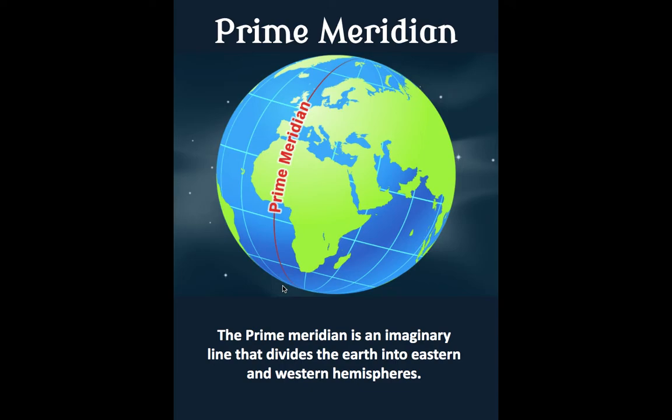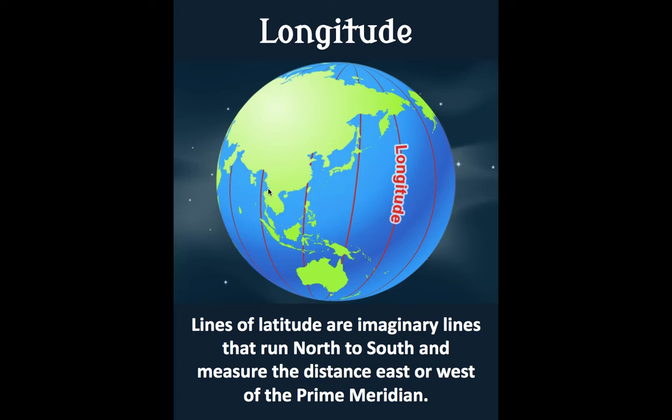This line chops the earth into eastern and western halves. We call this line the prime meridian. The prime meridian is an imaginary line that divides the earth into eastern and western hemispheres. It chops the earth in half — it's a line that goes from north to south, chopping the earth into eastern and western halves.